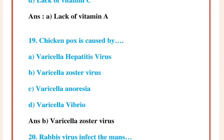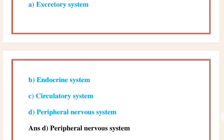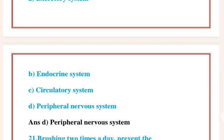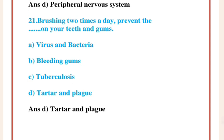Question 19: Chickenpox is caused by Answer B: Varicella zoster virus. Question 20: Rabies virus infects the man Answer D. On your teeth and gums: tartar and plaque. Thank you.